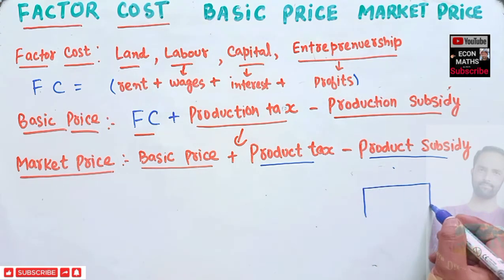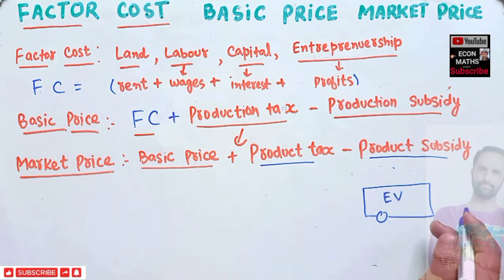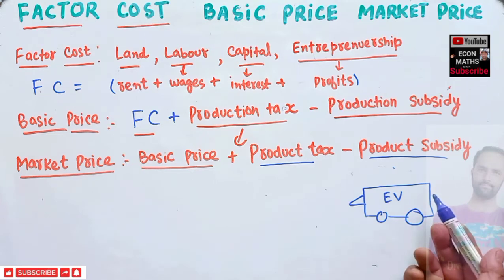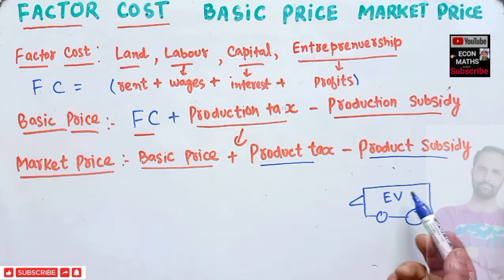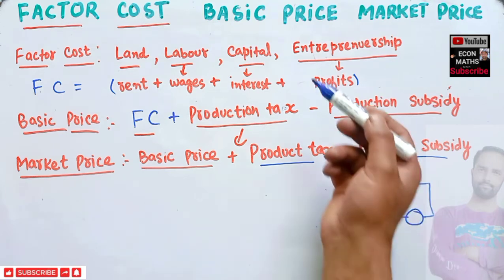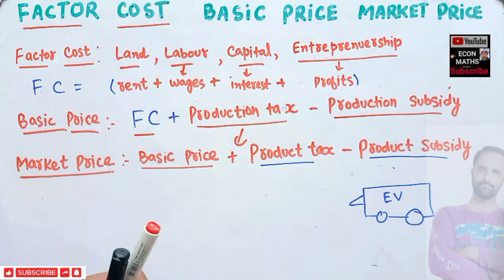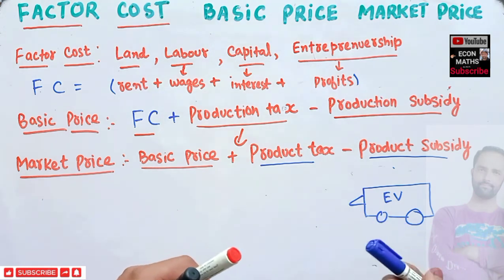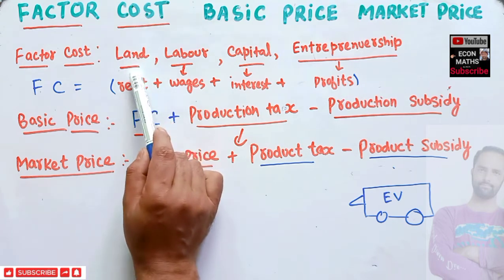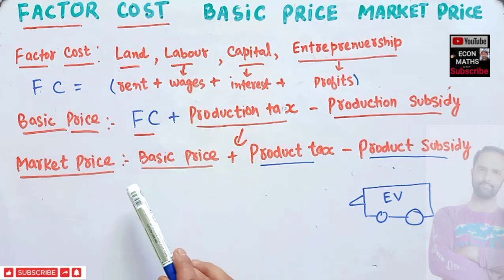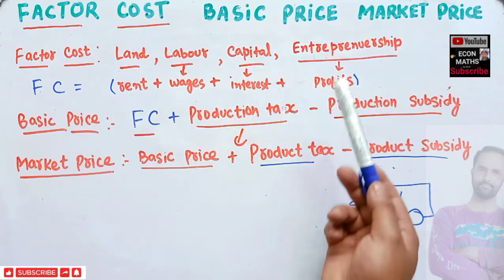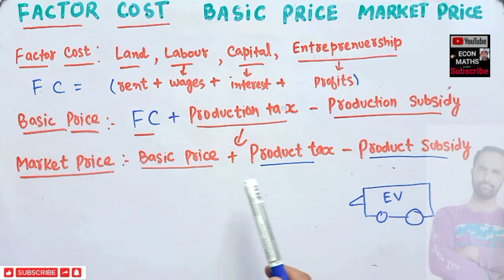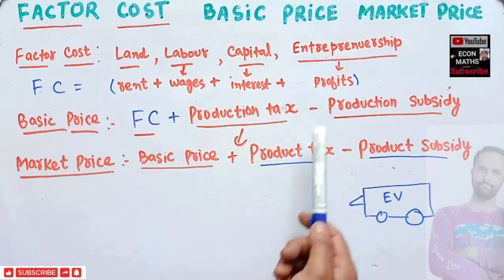Let's take the example of producing an electric vehicle like a Tesla. To produce it, we need land to set up the factory, labor in the manufacturing process, capital for manufacturing, and entrepreneurship — the person who takes the risk. When we use land, we pay rent; labor receives wages; capital earns interest; and entrepreneurship earns profit. So factor cost equals rent plus wages plus interest plus profit.